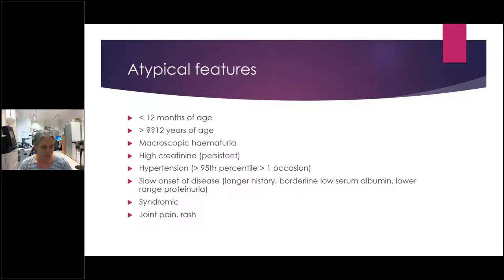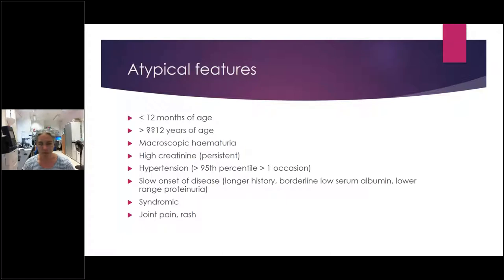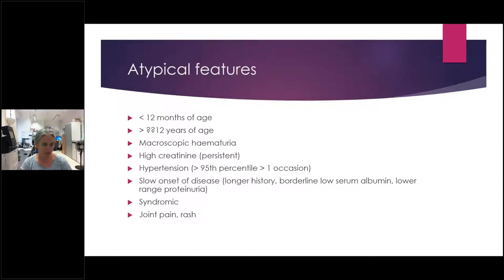Other atypical features: definitely macroscopic haematuria — there shouldn't be children presenting with large amounts of blood in urine. It is quite typical to find microscopic haematuria, so 1+, 2+, or sometimes 3+ blood on dipstick can be normal in the context of nephrotic syndrome. If they've got a consistently high creatinine — sometimes you get it acutely — but if it's persistently high, that is an atypical feature to consider.